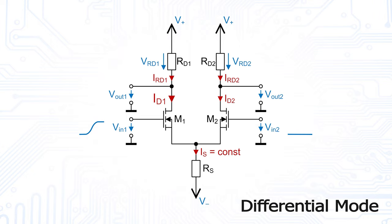As a result, the current and the voltage drop across the left drain resistor also increases, resulting in a lower output voltage at output one.